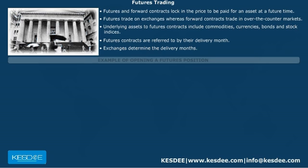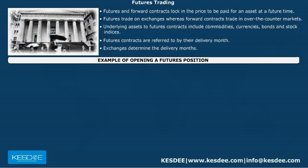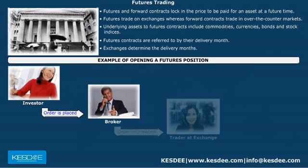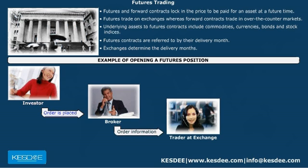You may be asking how a Futures Contract comes into existence. Let's consider an example. On June 5th, you might call your broker to buy two December gold futures, which trade on the COMEX division of the New York Mercantile Exchange. Since each contract is for delivery of 100 ounces of gold, you have in effect asked your broker to buy 200 ounces of December gold. Your broker would then pass your order on to a trader at the exchange.